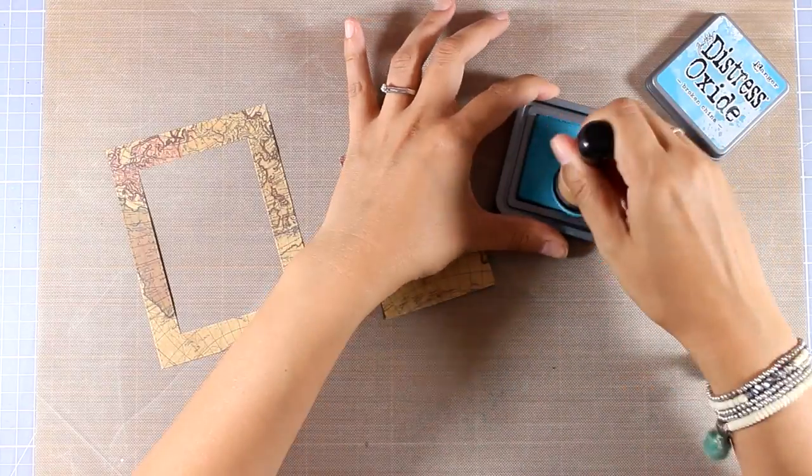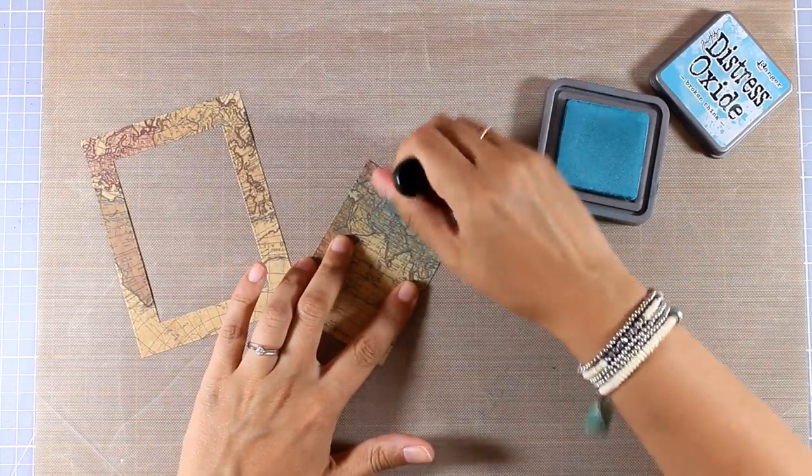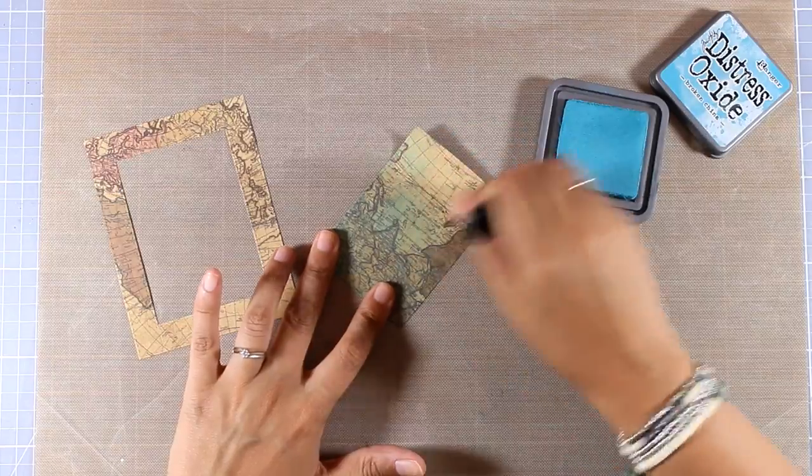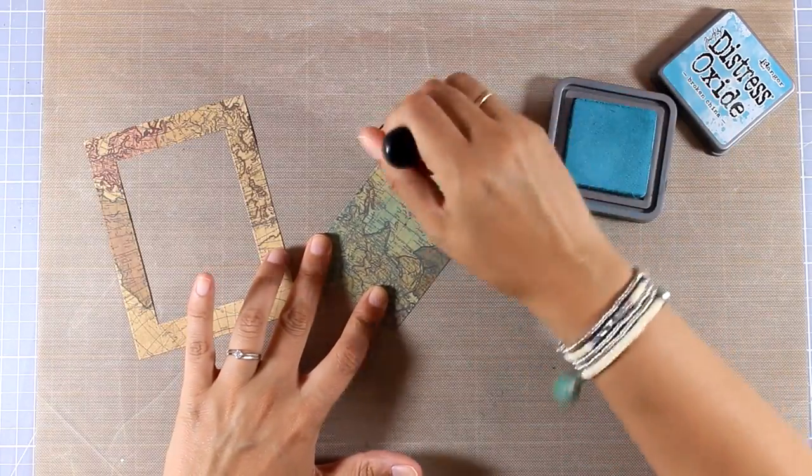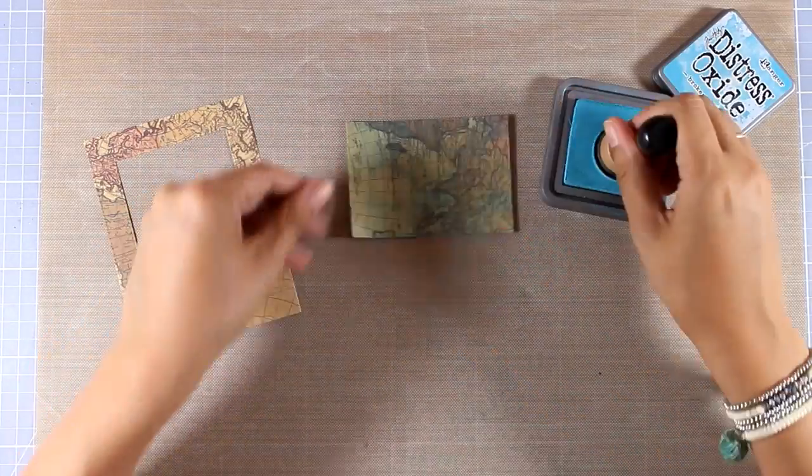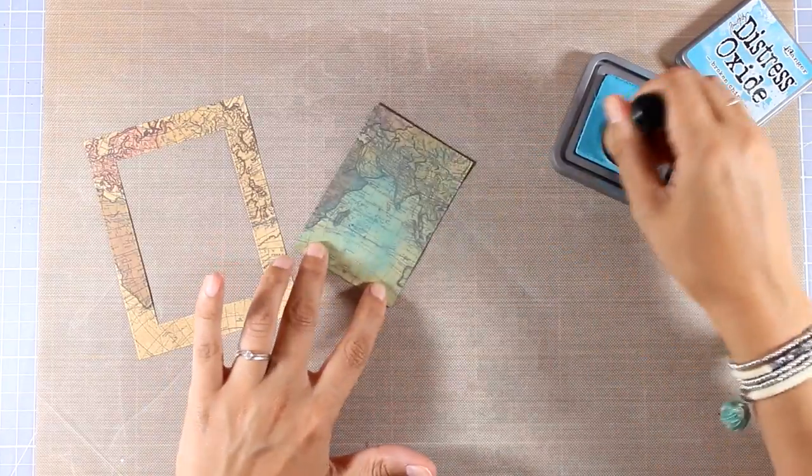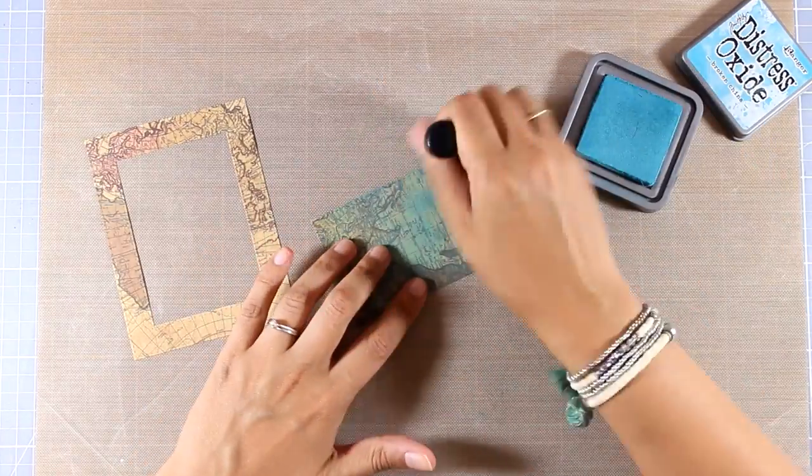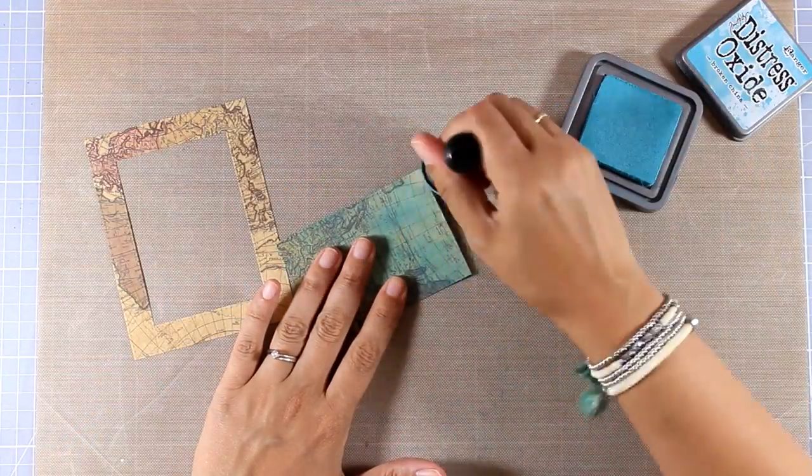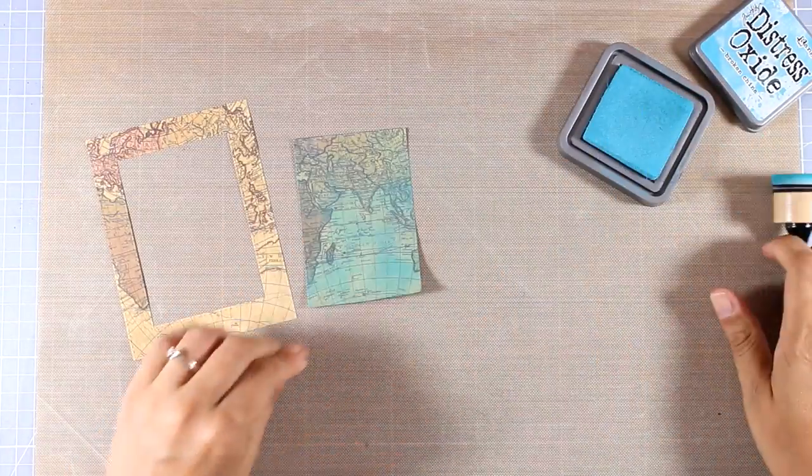Now for the inside I'm going to go over it with distress oxide ink. For that I'm using my blending tool and I'm very softly applying some ink on top. I'm using Broken China. By adding this tint of color I'm not covering up the design, so when I place it inside that frame you'll get that continuous design. But at the same time I'm going to have a different color so it's going to stand out even more.